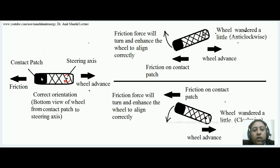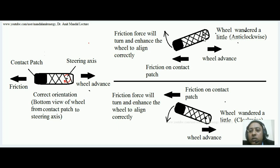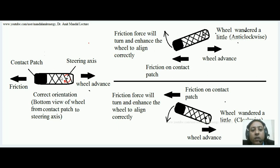When the motorcycle is advancing, friction is applied on the contact patch in exactly the opposite direction. Now suppose the wheel wanders a little in the anti-clockwise direction due to some disturbance — you can see the contact patch is just behind this steering axis. Friction is still acting only on the contact patch, so it will try to turn this wheel and bring it back to its straight orientation, with the contact patch just behind the steering axis.